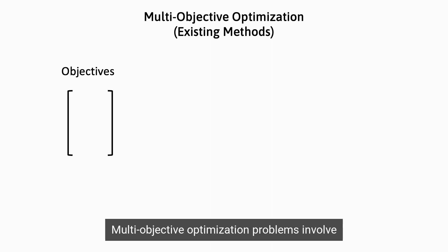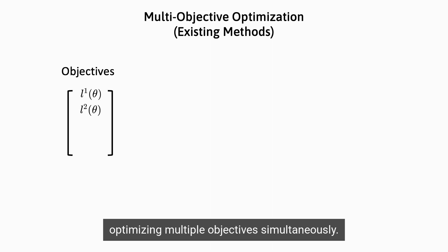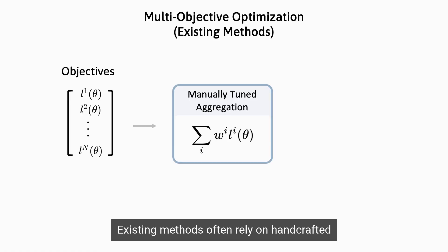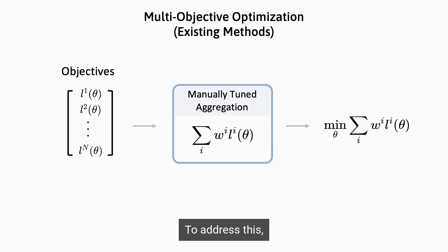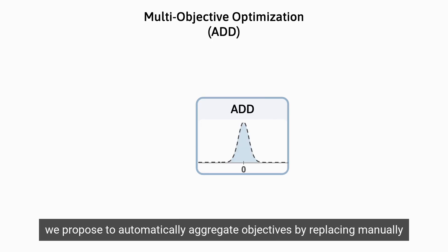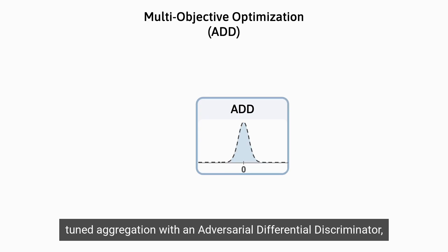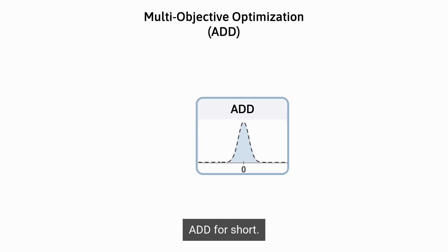Multi-objective optimization problems involve optimizing multiple objectives simultaneously. Existing methods often rely on handcrafted aggregation functions that are time-consuming to tune. To address this, we propose to automatically aggregate objectives by replacing manually tuned aggregation with an adversarial differential discriminator, ADD for short.